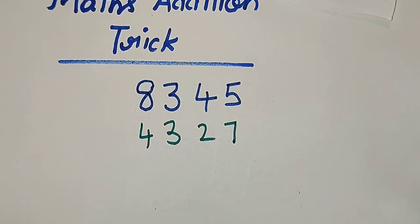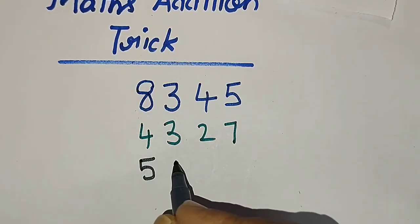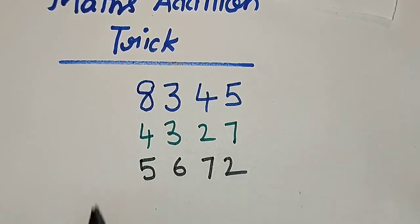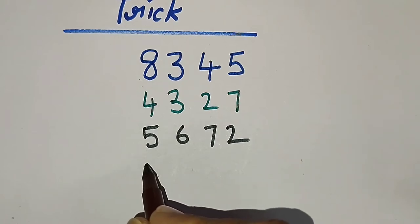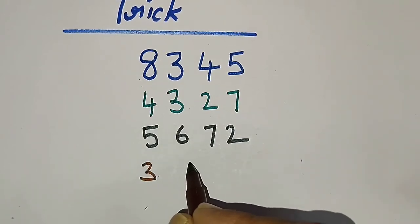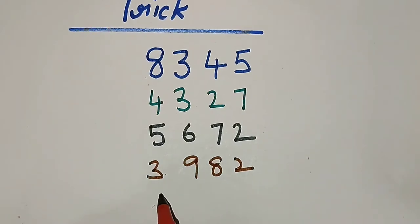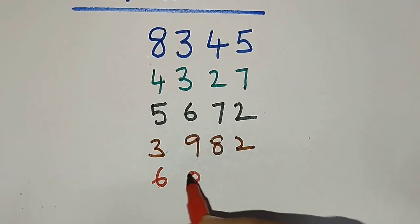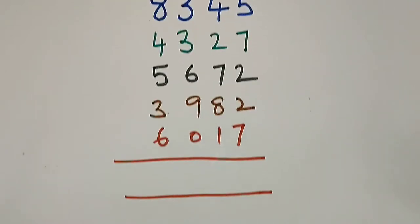Now I will add another number to this. My number will be like this: 5672. Once again, ask your friend to write another 4-digit number. Suppose he has written 3982. Then I will write another 4-digit number: 6017. Finally, we will add up all these numbers.